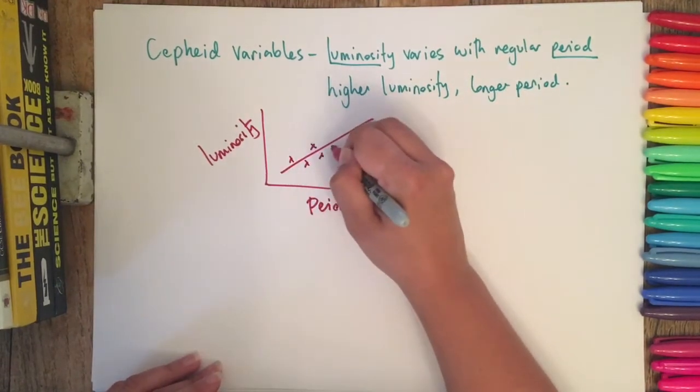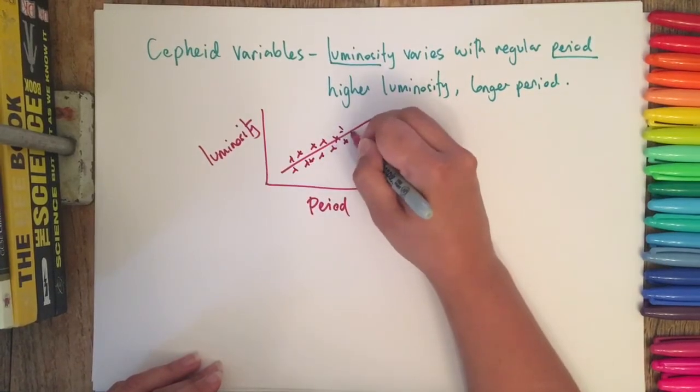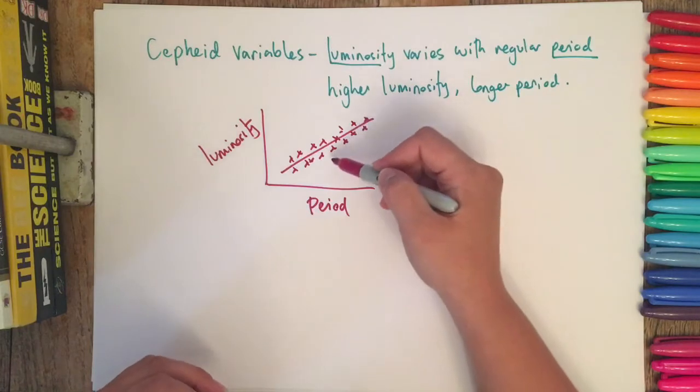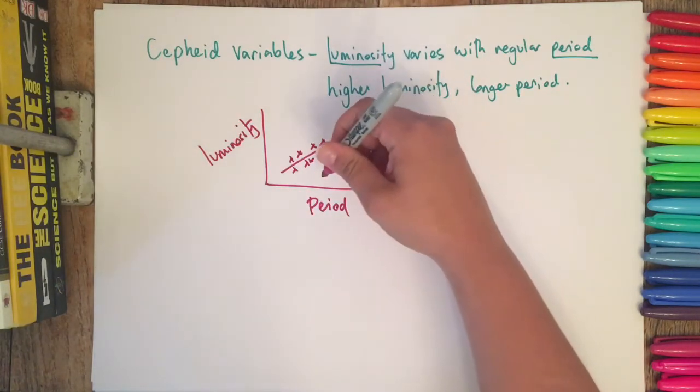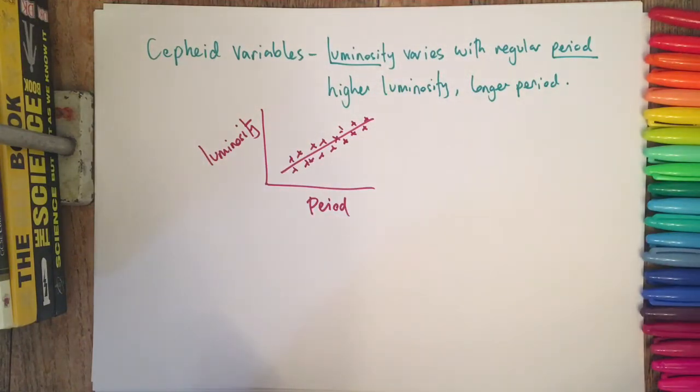There was some scatter around the line, it wasn't massively precise, but she did find that there was a relationship that we can then use if we actually find a Cepheid variable that we want to use.